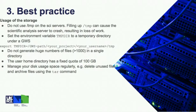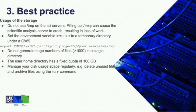In terms of storage, do not use the local temporary directory on the CISF server — filling the local temp can cause the scientific server to crash. If you need a temporary directory, consider a subdirectory of your group workspace and configure the environment variable TMPDIR as shown. Also, if you create too many files in a single directory, that can affect server performance. The disk quota is fixed at 100GB for your home directory, so manage your disk usage regularly by deleting unused files and archiving files using the tar command.